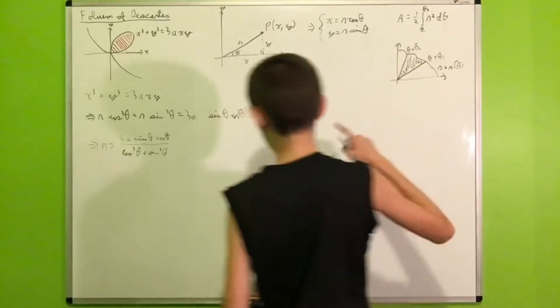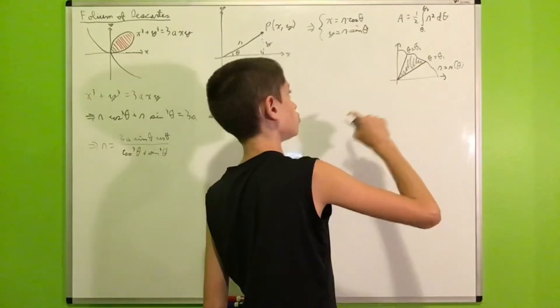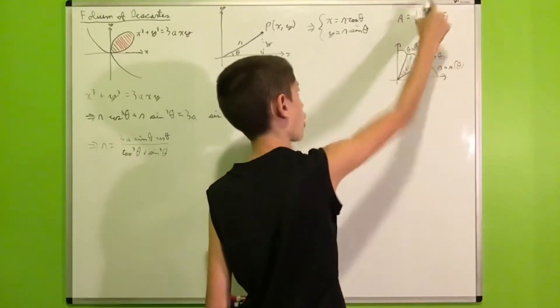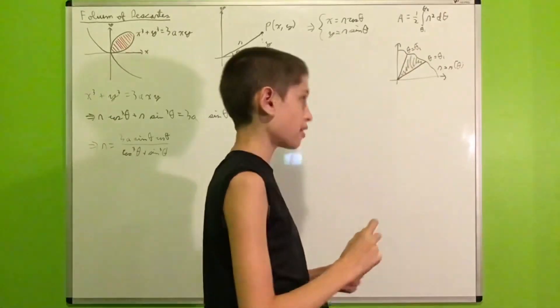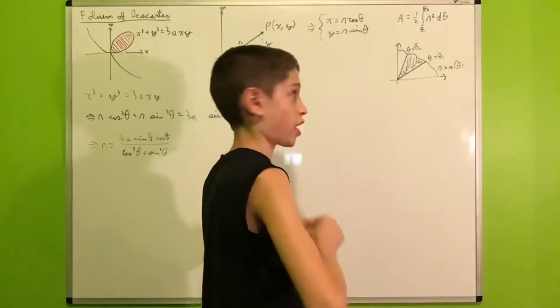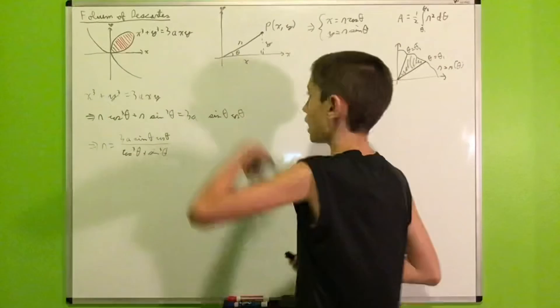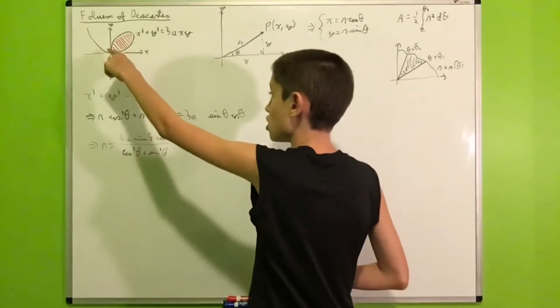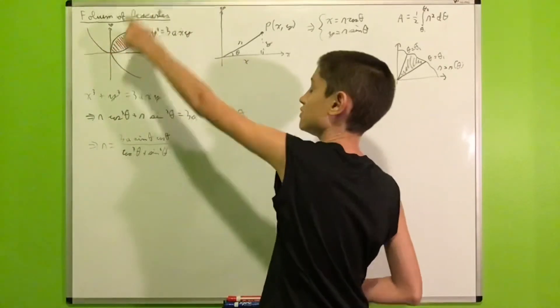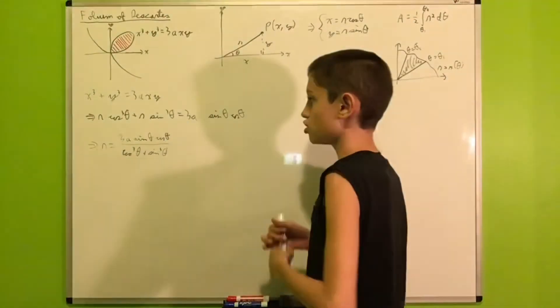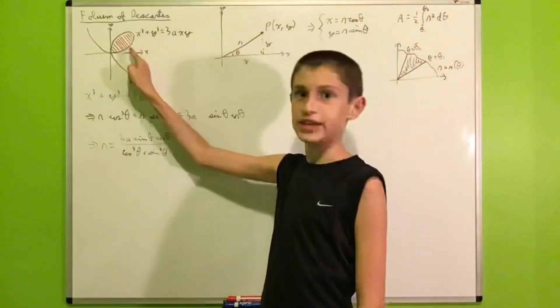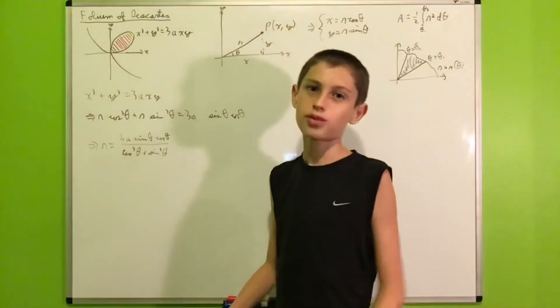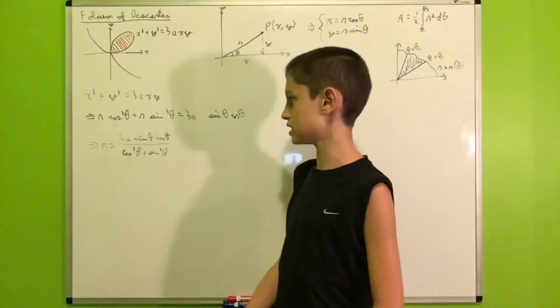So, first of all, we need to know what are our bounds of integration. What are the theta values over which we are integrating? Well, we would like to observe that the loop crosses itself at the origin. So, if we are at the origin, it means that the distance from the origin is 0, which means R is equal to 0.